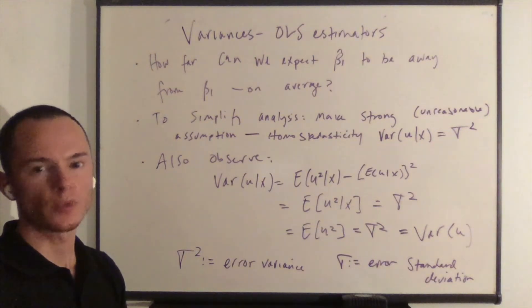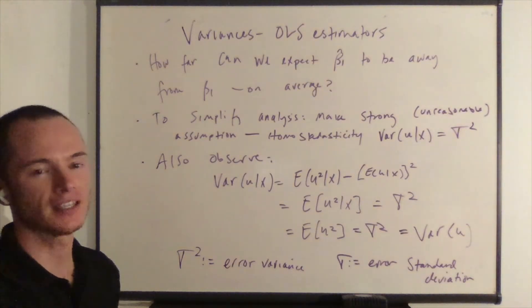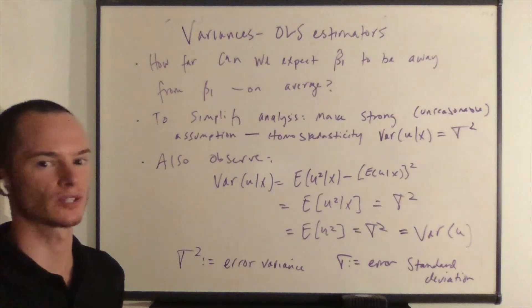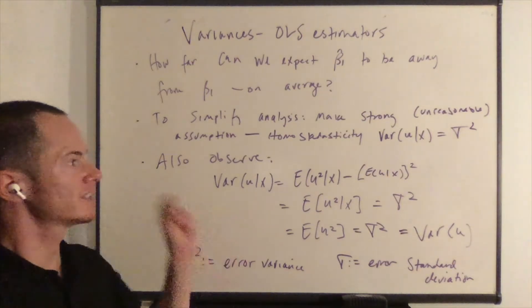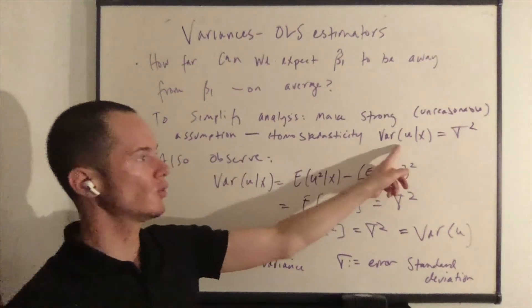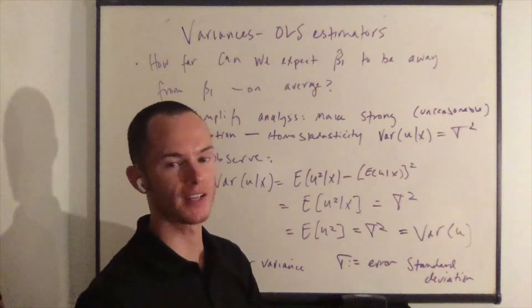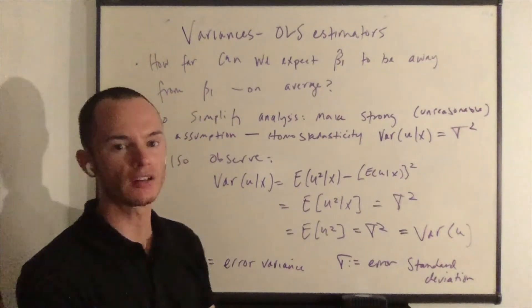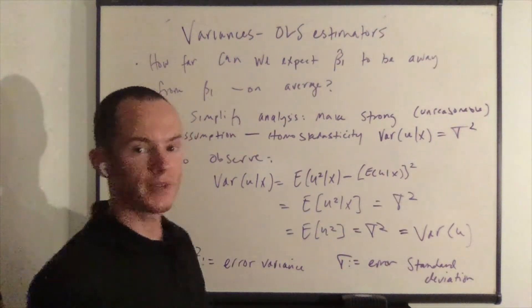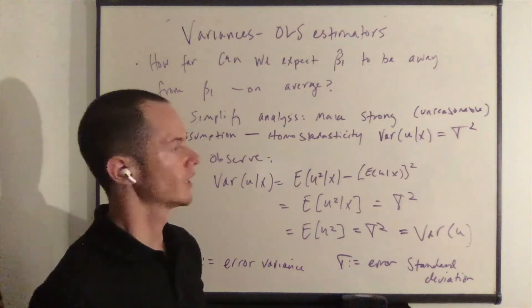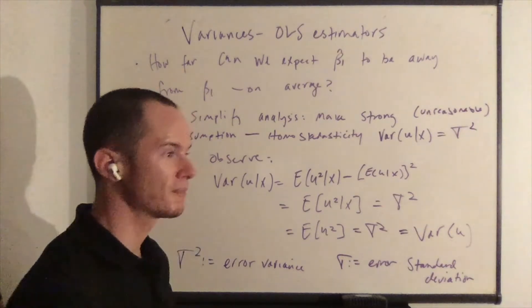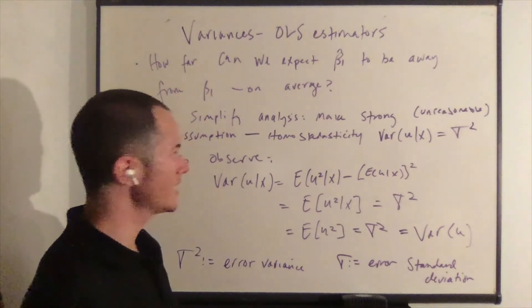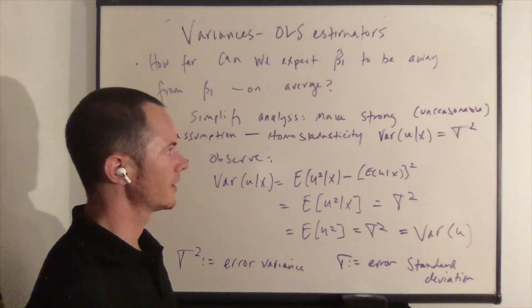To simplify the analysis, we are going to add to our list of assumptions a strong and, in many cases, unreasonable assumption, which is homoscedasticity. Homoscedasticity is the result that the variance of u given x is constant over the domain of x. So the spread of the error over the domain of x is constant. Now this is a relatively unreasonable assumption for many scenarios in economics, but making this assumption does simplify the analysis.